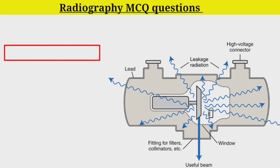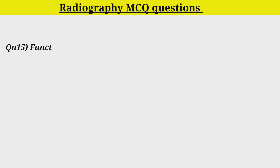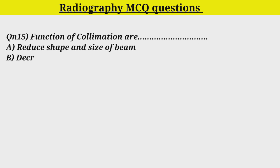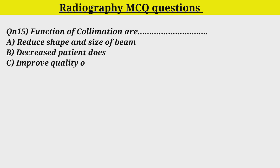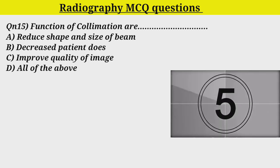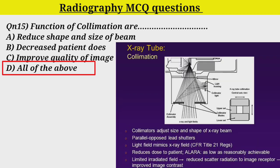Q15. Functions of collimation are: Option A. Reduce shape and size of beam. Option B. Decrease patient dose. Option C. Improved quality of image. Option D. All of the above. Correct answer is Option D. All of the above.